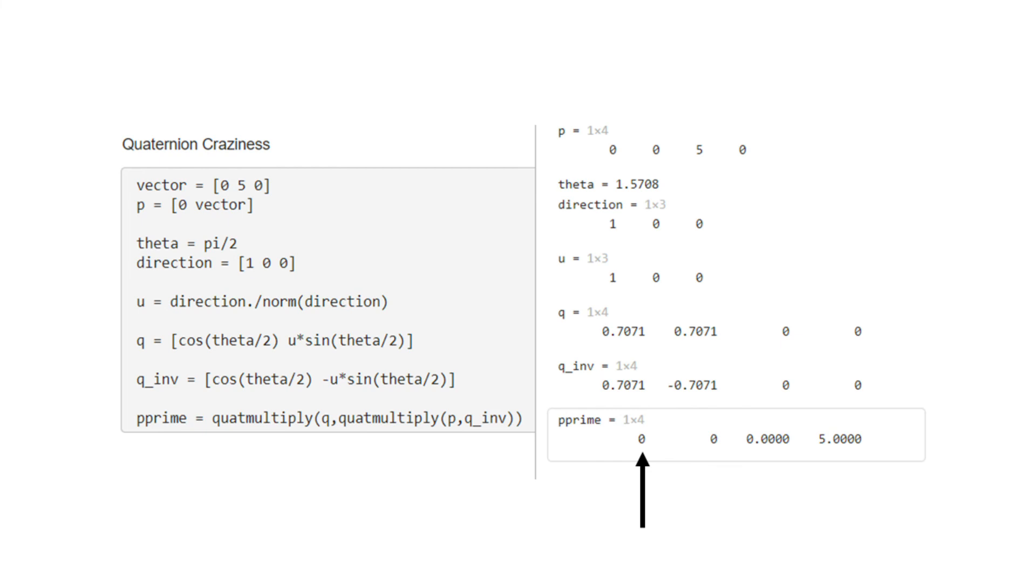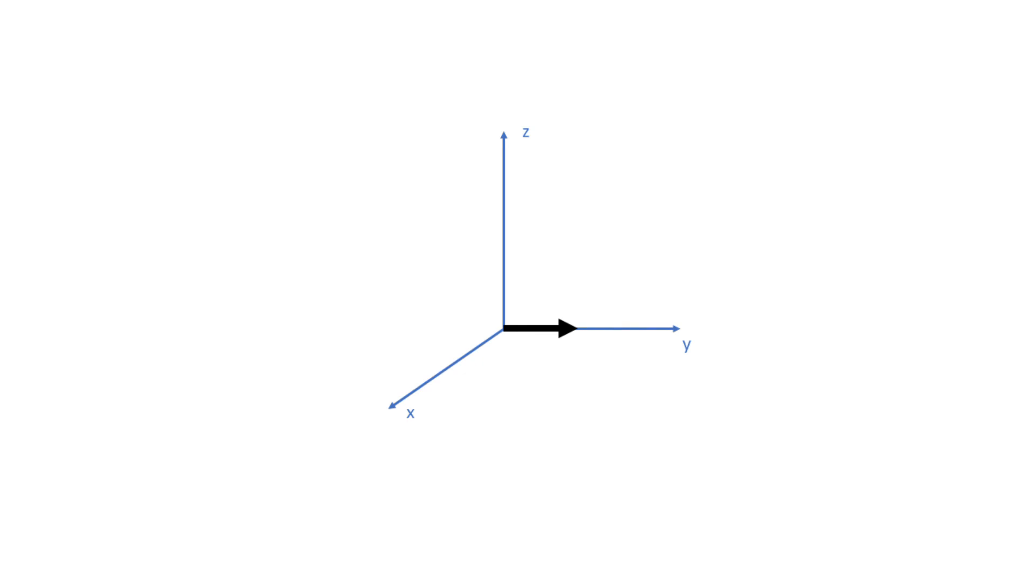And our example makes intuitive sense. We rotated a vector along the y-axis by 90 degrees about the x-axis, which gives us a vector pointing along the z-axis.